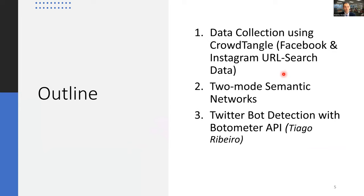We have three topics to cover today. First, data collection using the CrowdTangle platform, which allows us to access public and popular Facebook pages, groups and Instagram accounts. Then we'll talk about two-mode semantic networks — a type of network representation applicable to CrowdTangle and other platform datasets. Finally, for the bonus topic, we'll cover social bot detection, specifically in the context of Twitter.